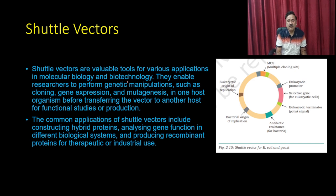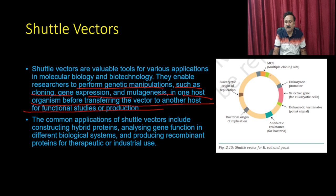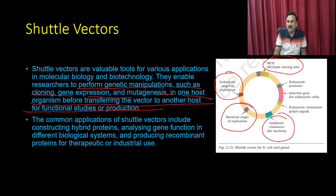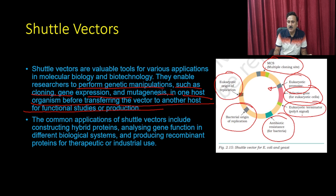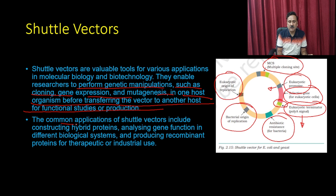Shuttle vectors are valuable tools for various applications in molecular biology and biotechnology. They enable researchers to perform genetic manipulation — cloning, expression, and mutagenesis — in one host, then transfer the vector to another host for functional studies or production. An example shuttle vector contains: multiple cloning site, eukaryotic and bacterial origins of replication, selectable markers for bacteria and eukaryotes, eukaryotic promoter, eukaryotic termination sequence, and poly-A signal.